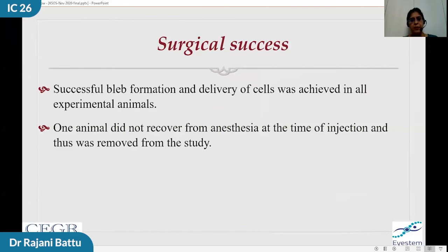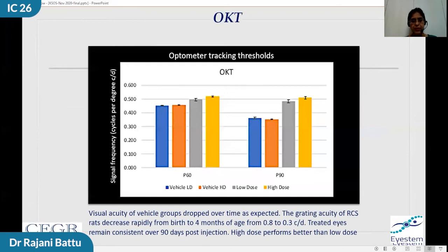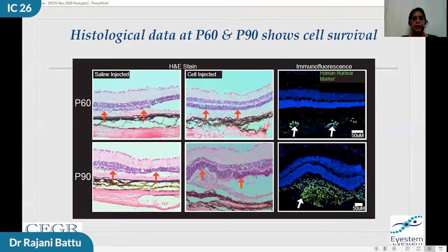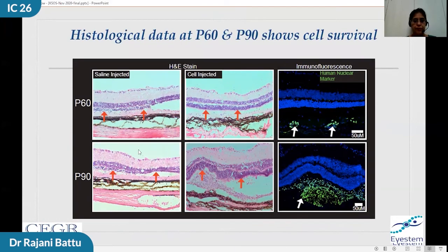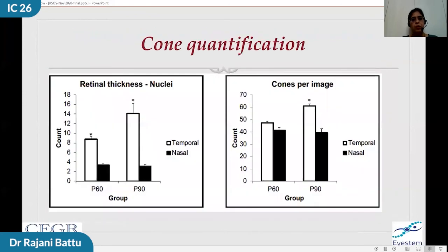There was successful bleb formation and delivery of cells in all animals. One animal did not recover from anesthesia. Optokinetic tracking thresholds at day 60 and day 90 showed that at 90 days, when normal animals without injection continued to lose vision, there was significant visual preservation in animals that had the injection. Histological data showed that the outer nuclear layer in cell-injected eyes was healthier compared to control eyes, with results more striking at day 90. Cone quantification and retinal thickness were also assessed.